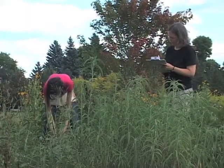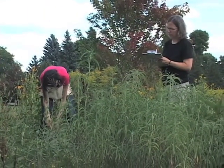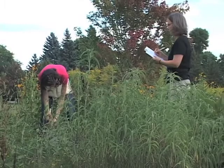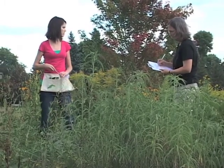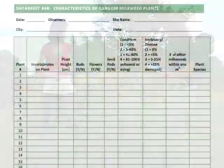Once we finish measuring monarch density, we randomly choose 30 plants and assess their condition using datasheet 4B, Characteristics of Random Milkweed Plants.